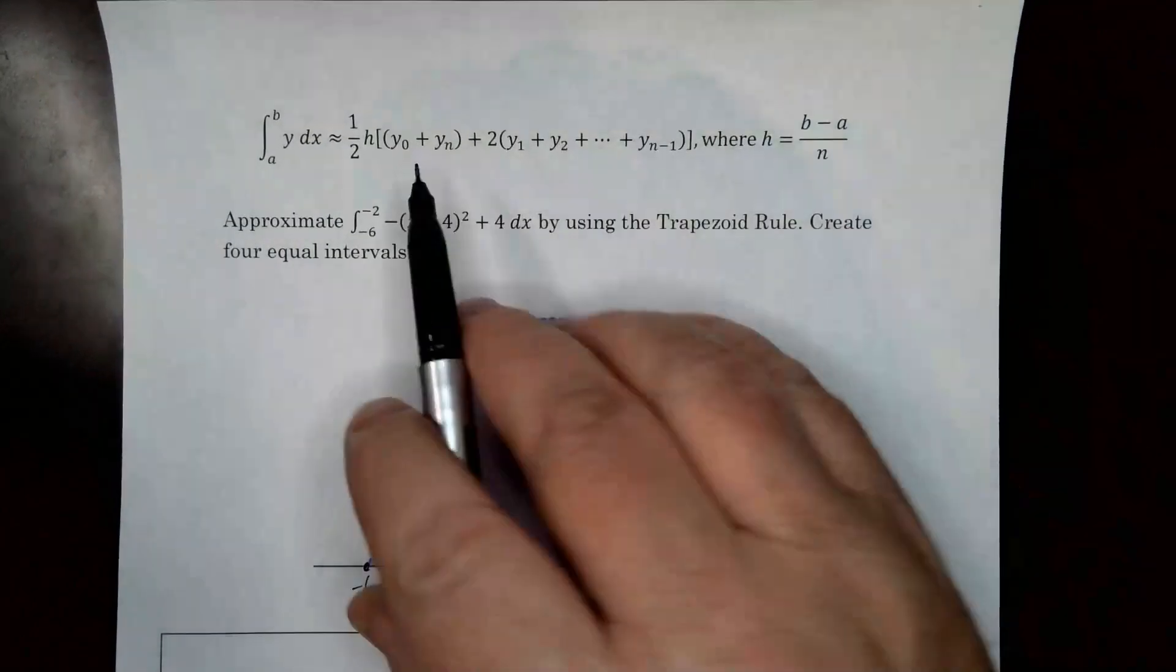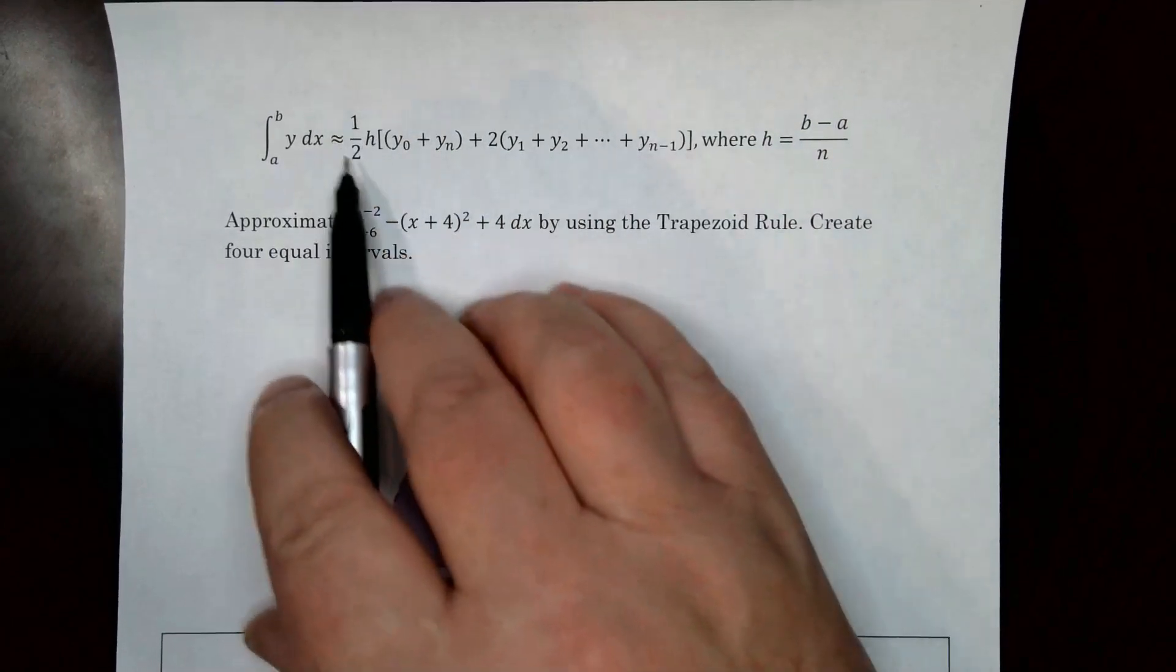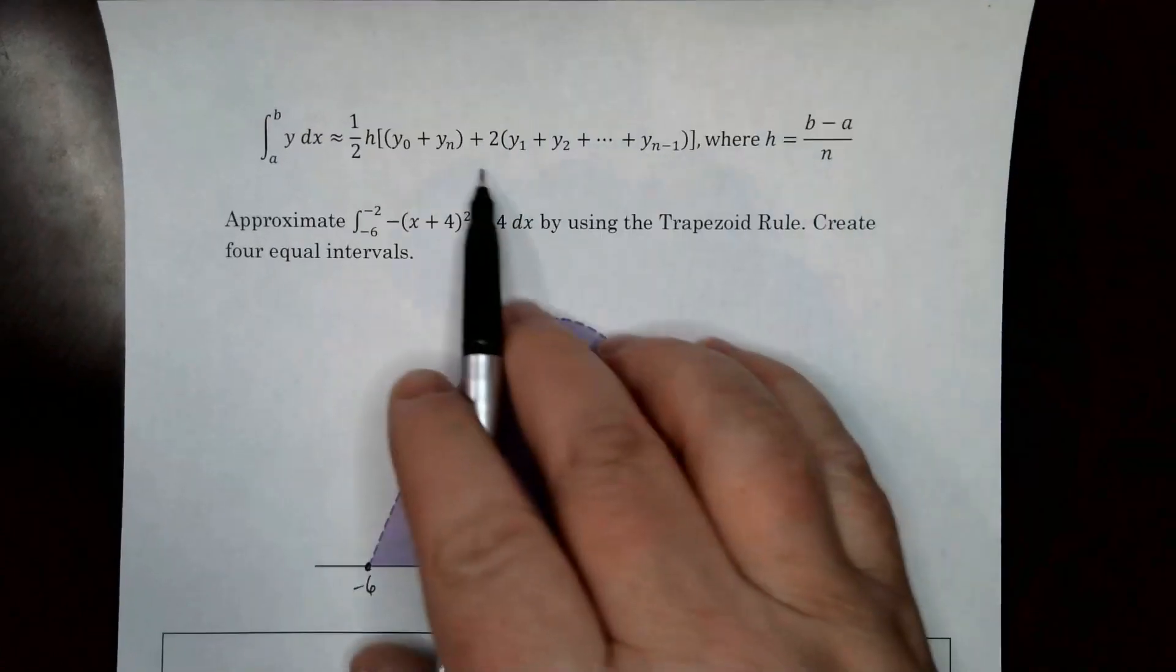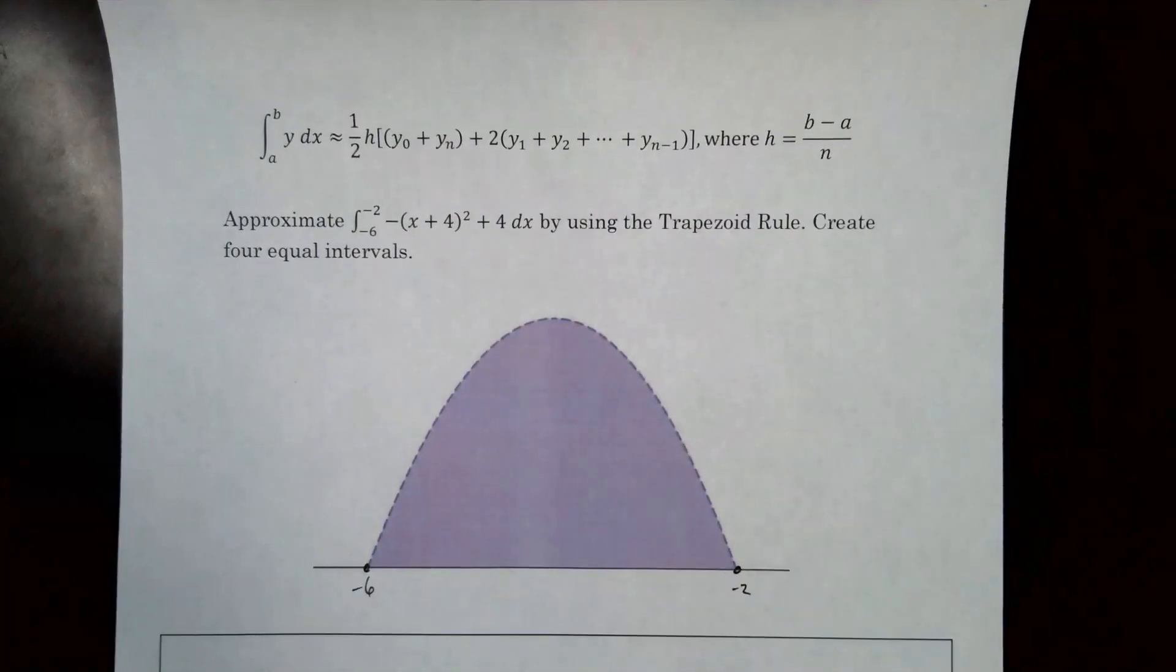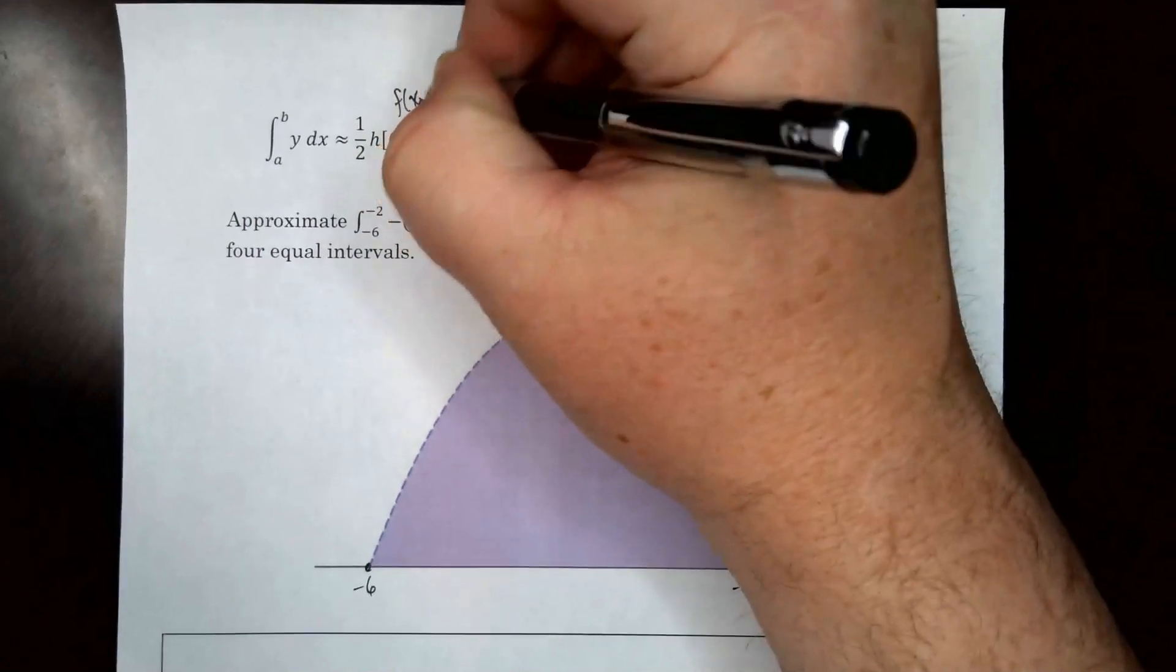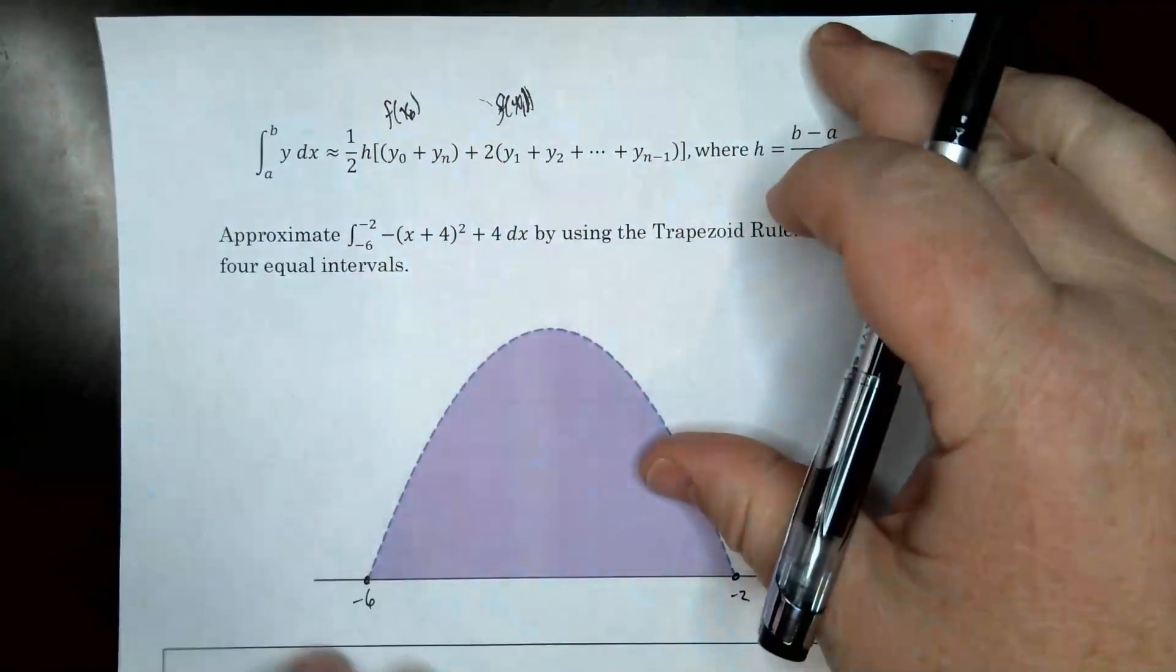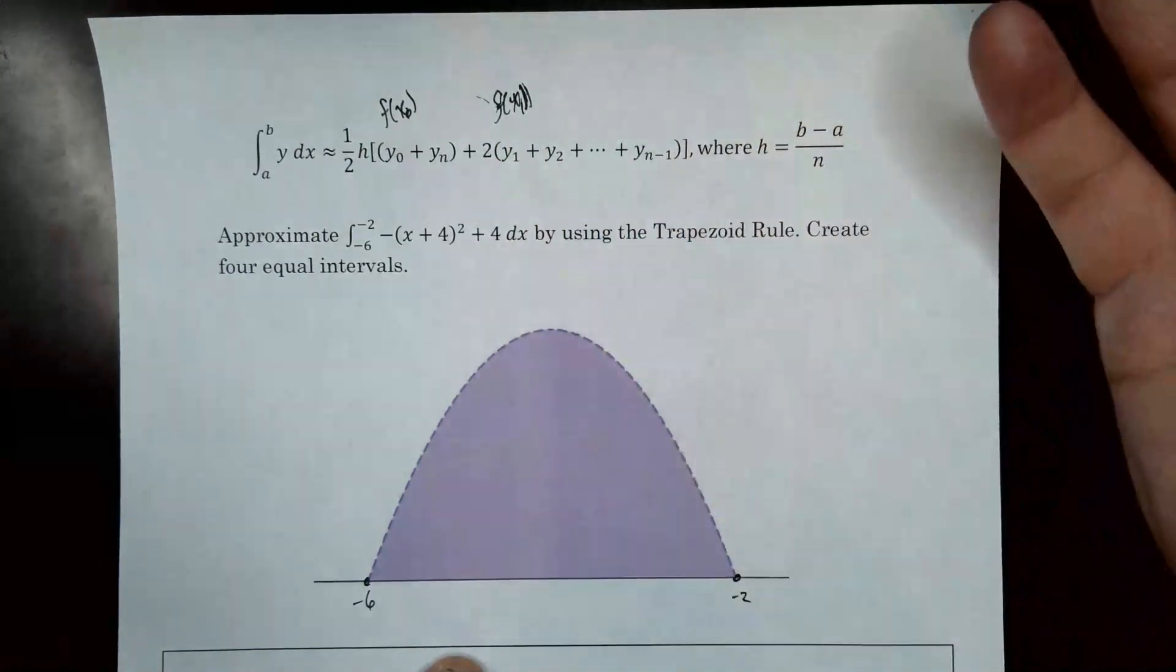So here's the deal. Those y's, those are just the outputs. And what this formula is, is if you wrote out the sum of all the trapezoids that you're going to make, and you simplified it before you plugged in any numbers, you'd get this. There's other variations of the formula, but they all do the exact same thing. Like sometimes they say f of x sub 0, or it'd be f of x sub 1, or whatever. But it's all the same thing.